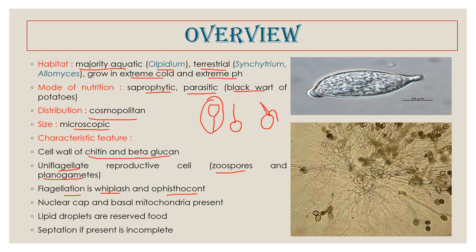Another chief feature is that their zoospores contain a nuclear cap at the anterior and a basal mitochondria. So if this is the spore and this is the flagellum, the nucleus will have an anterior nuclear cap and a basal mitochondria, and there will be the blepharoplast from which the flagellum arises. The zoospores or gametes will have a large amount of lipid droplets, which are the reserve food matter in fungi.